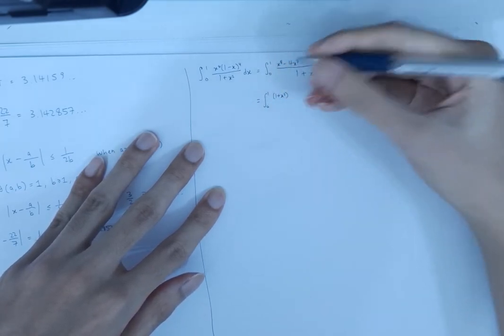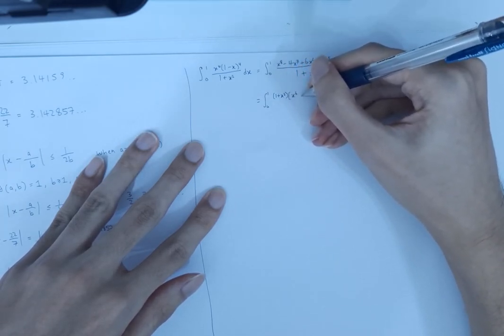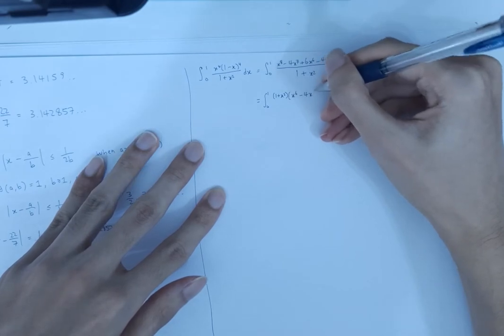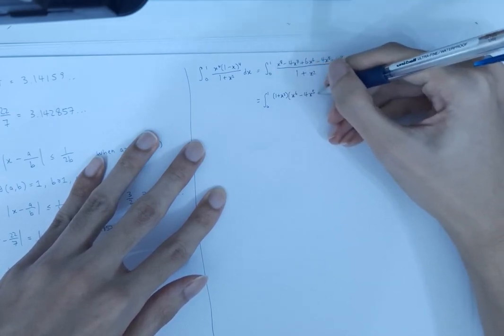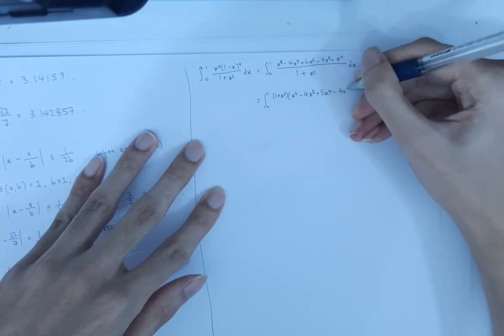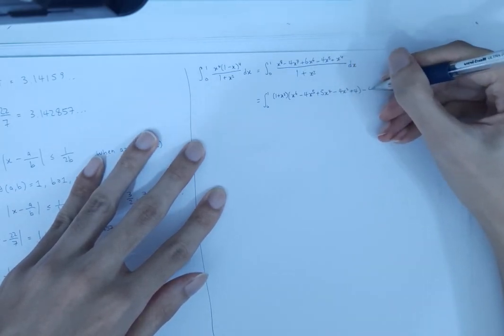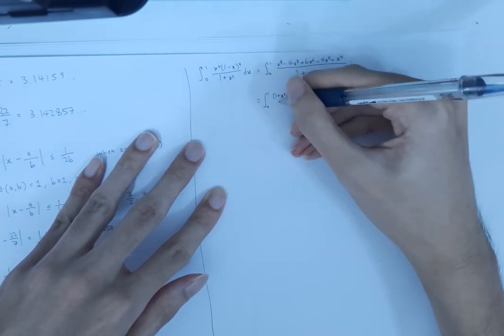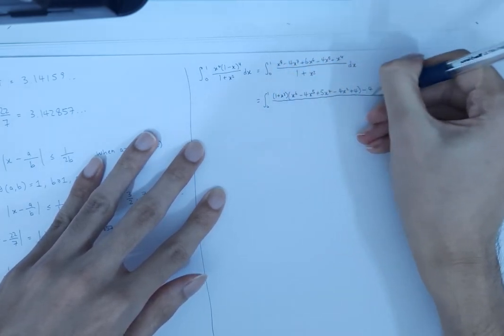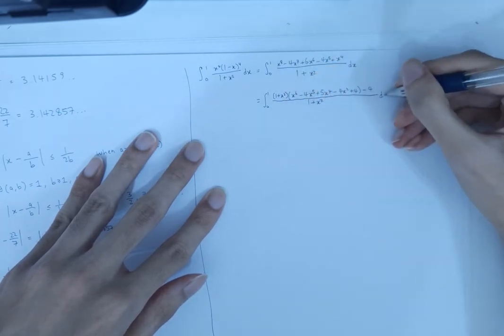We try to factor out a 1 plus x squared. This thing becomes x power 6 minus 4 x power 5 plus 5 x power 4 minus 4 x squared plus 4. We have a remainder of minus 4. This minus 4 is not multiplied with this 1 plus x squared.